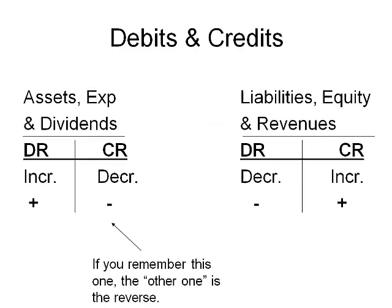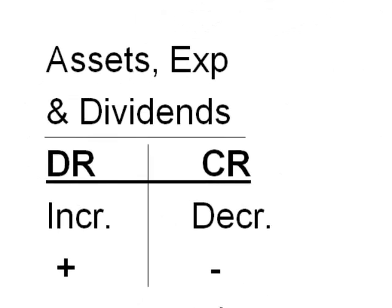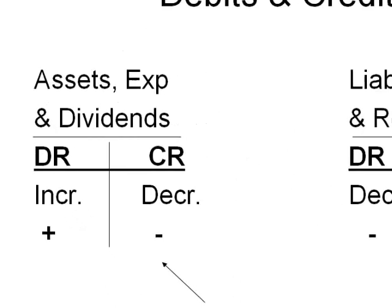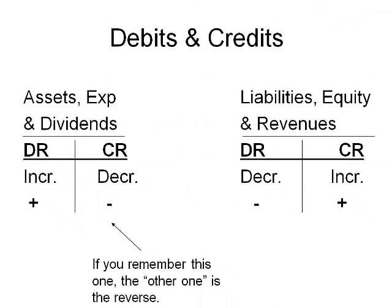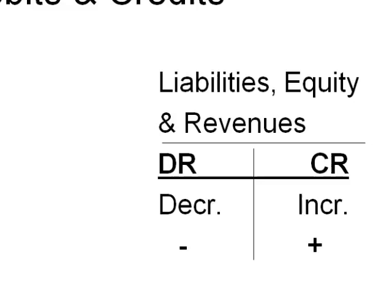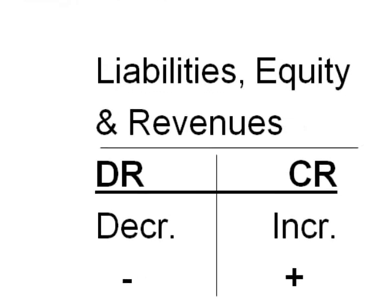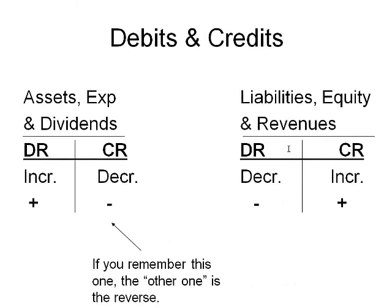Looking at the left side: for assets, expenses, and dividends, a debit makes the balance go up and a credit makes it go down. If you remember the one on the left, everything else is the reverse. Assets are on the balance sheet — so are liabilities and equity, which are on the other side. For liabilities and equity, a debit makes it go down and a credit makes it go up.